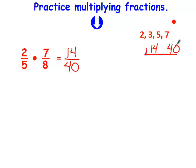And I run it through 2, 3, 5, and 7. I see both of these numbers are even. So I'm going to divide by 2. 2 goes into 14 seven times. It goes into 40 twenty times.